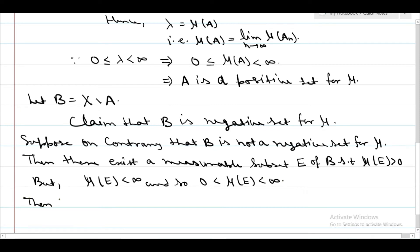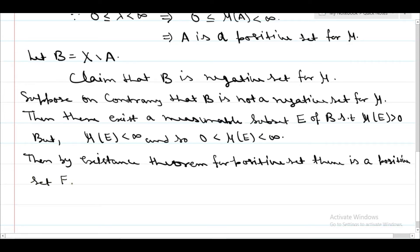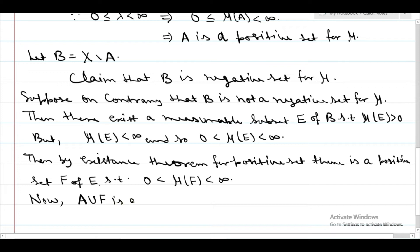Then by the existence theorem for positive sets, there exists a positive set F of E such that mu of F is greater than 0 and less than infinity. So A union F is a positive set, and A intersection F equals empty.